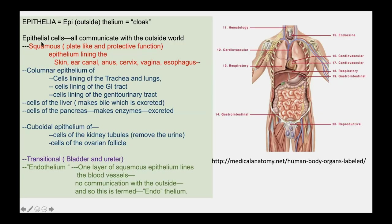Putting on my teaching hat — epithelium, epi meaning outside, thelium meaning a cloak. Epithelial cells are those that communicate with the outside world. Squamous epithelium lines the skin, ear canal, anus, cervix, vagina, and esophagus. Columnar cells line the trachea, lungs, GI tract, genitourinary tract, liver, and pancreas. Cuboidal epithelium includes kidney tubules and ovarian follicle. Transitional epithelium lines the bladder and ureter.